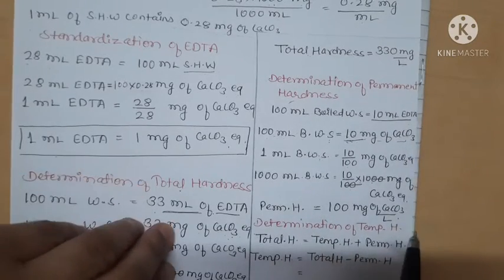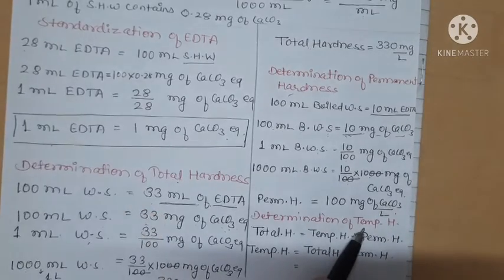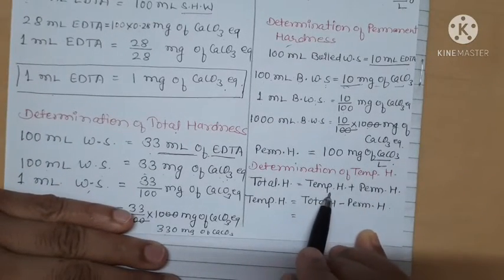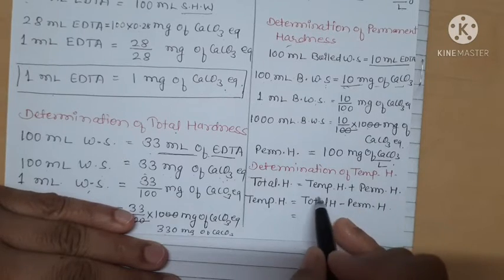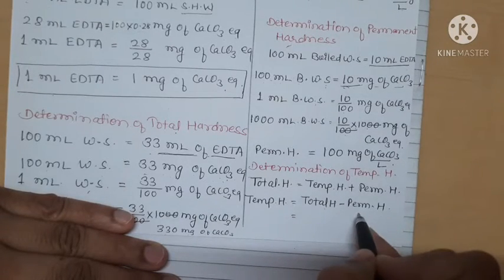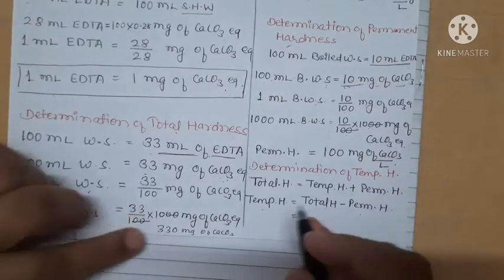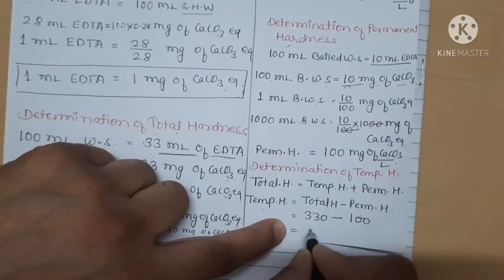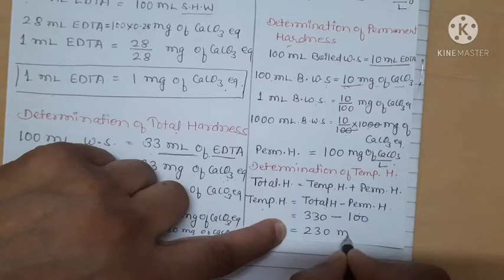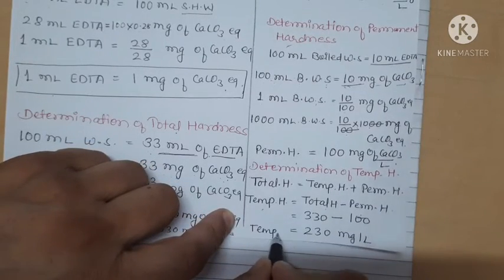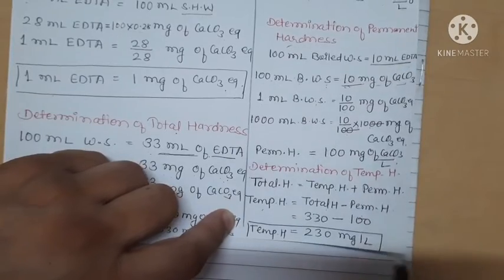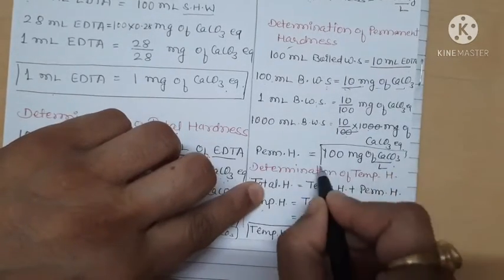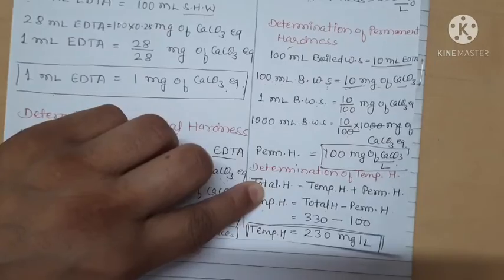To determine temporary hardness, we use the formula: total hardness = temporary hardness + permanent hardness. Total hardness is 330 mg/L and permanent hardness is 100 mg/L, so temporary hardness = 330 − 100 = 230 mg per liter.